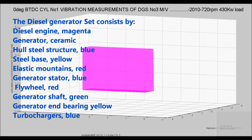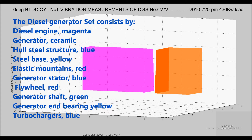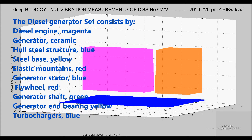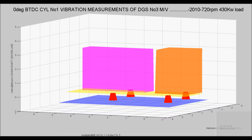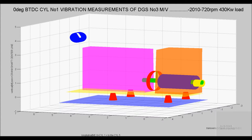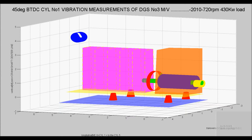The diesel generator set consists of the following components: diesel engine (magenta), generator (cyan), whole steel structure (blue), steel base (yellow), elastic mounts (red), generator stator (blue), flywheel (red), generator shaft (green), generator end bearing (yellow), and turbochargers (blue).